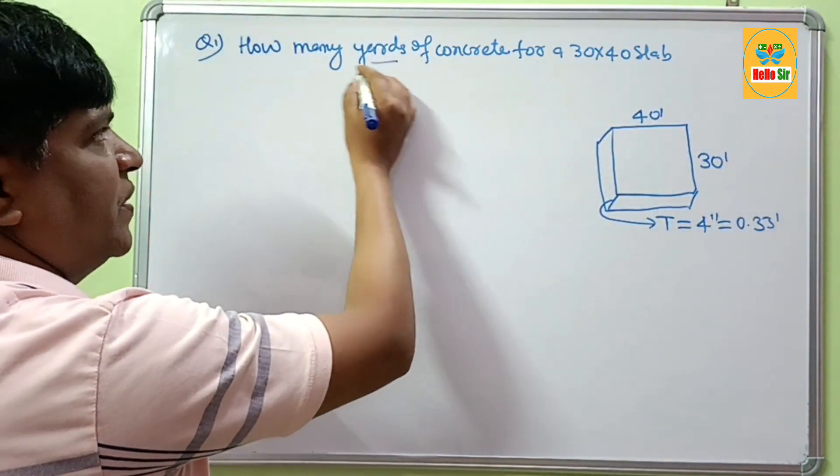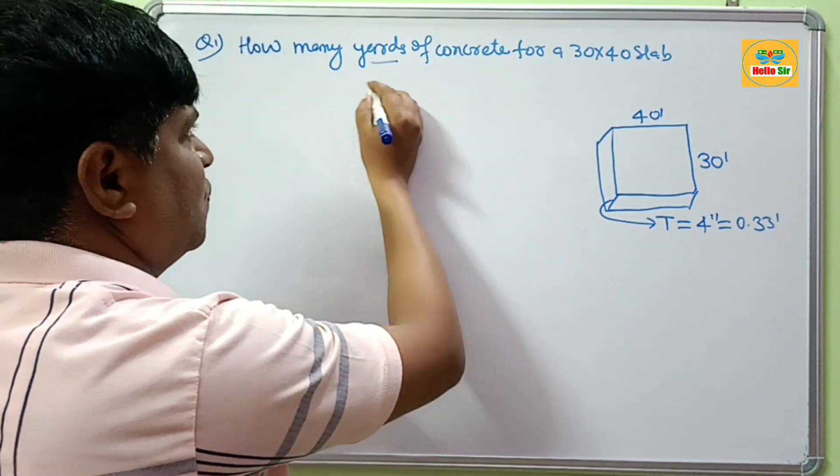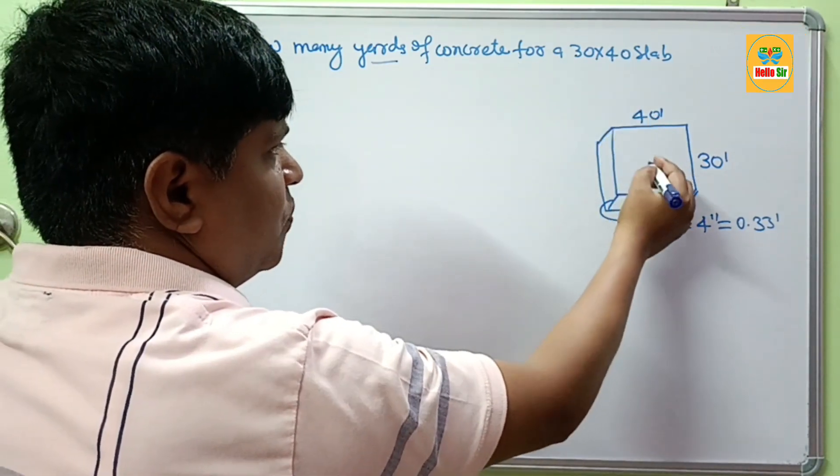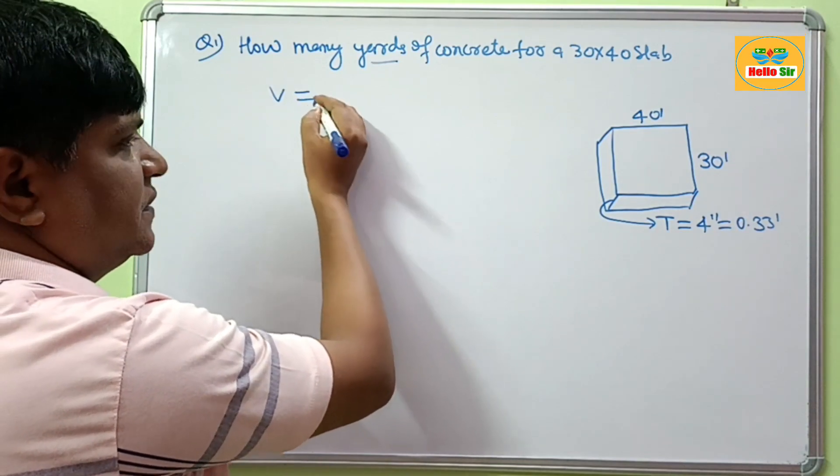Then your question is how many yards of concrete do I need for this? The required amount of concrete equals the volume of this slab. So we calculate the volume.